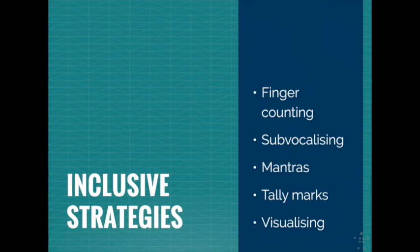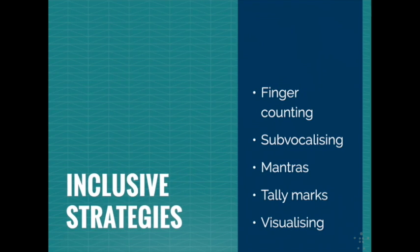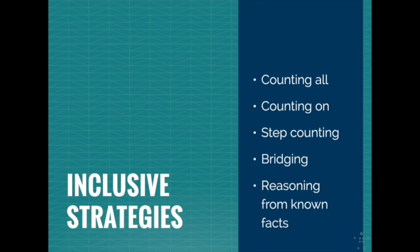Emerson and Baptee have identified some strategies which dyscalculic pupils may use. These include finger counting, sub-vocalising — which is talking under your breath — mantras, which are helpful if they are remembered correctly, tally marks and visualising, as well as counting all — which is essentially counting by ones — counting on, step counting, bridging, and reasoning from known facts. Reasoning from known facts has proven particularly beneficial for students with poor memories. Using strategies such as these are beneficial for the entire class and celebrate and support students with dyscalculia by valuing their involvement.